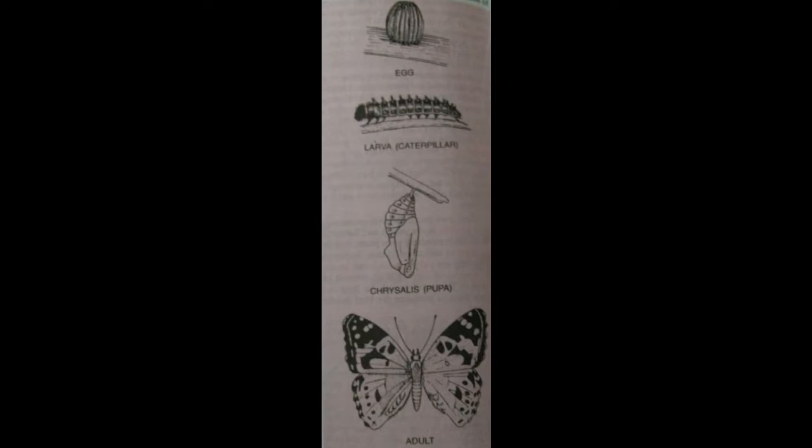In the majority of Lepidoptera, mandibles are totally wanting and the maxillae are highly modified to form a suctorial proboscis. You know, for taking honey they need a suctorial proboscis. When not in use, the proboscis is spirally coiled and stored away beneath the thorax. It presents an extraordinary variation in length. This is all about their mouthparts.